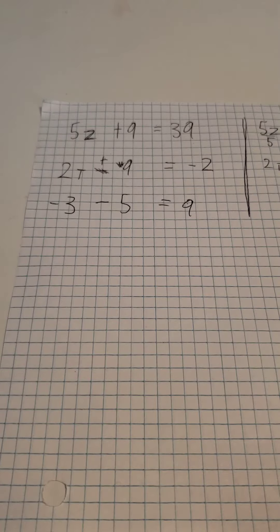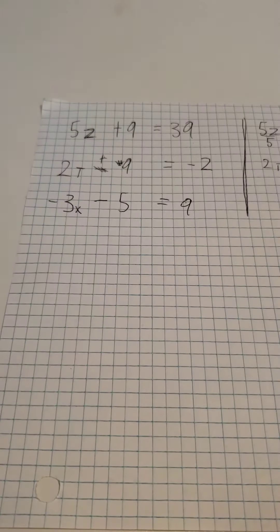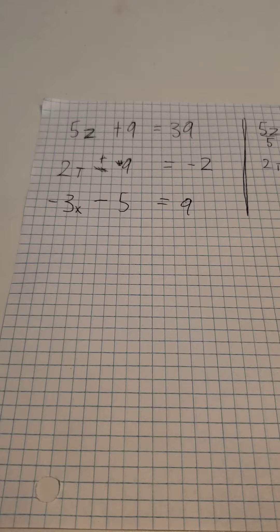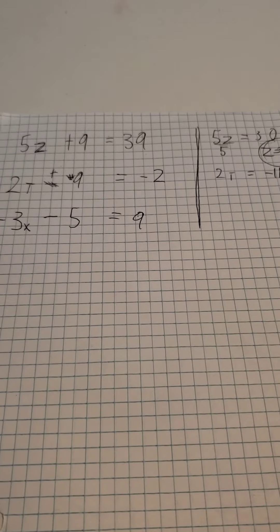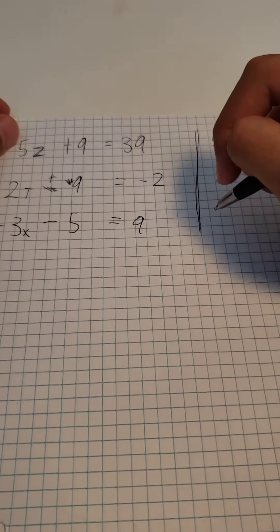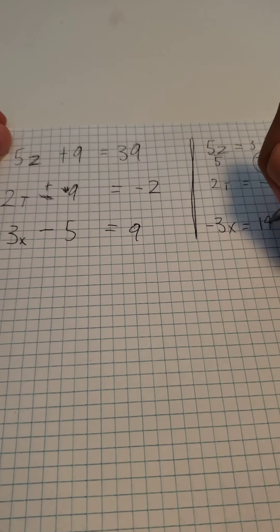Next we have, sorry I forgot the x, minus 3x minus 5 equals 9. It's very simple. Add 5 over here, so you have minus 3x equals 14.